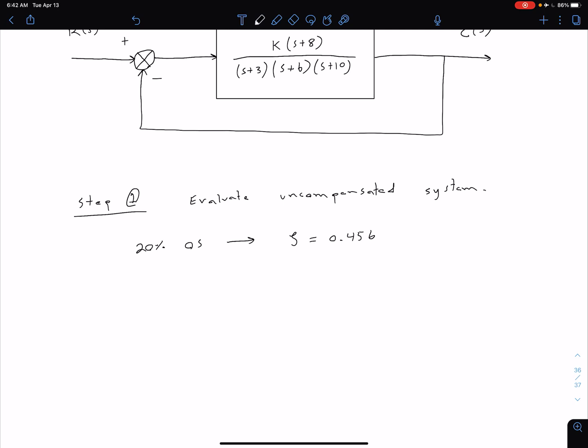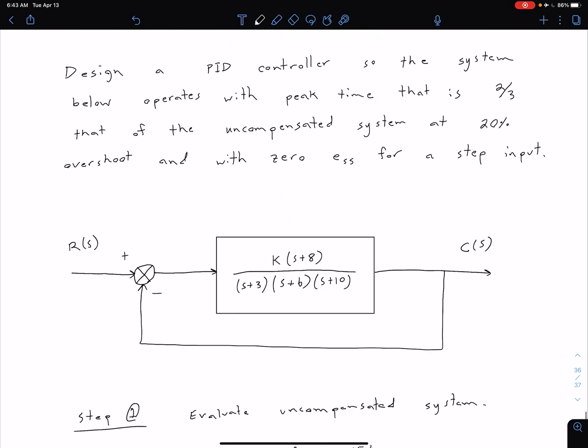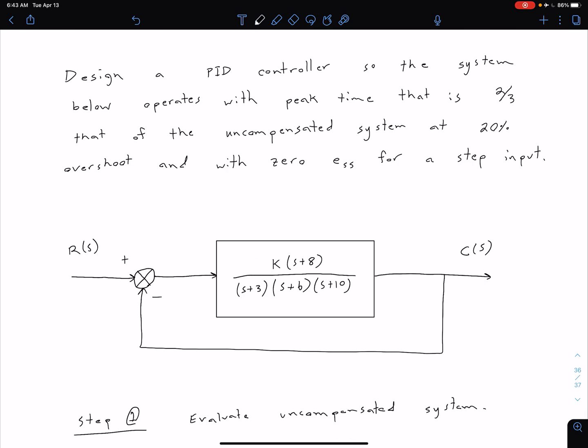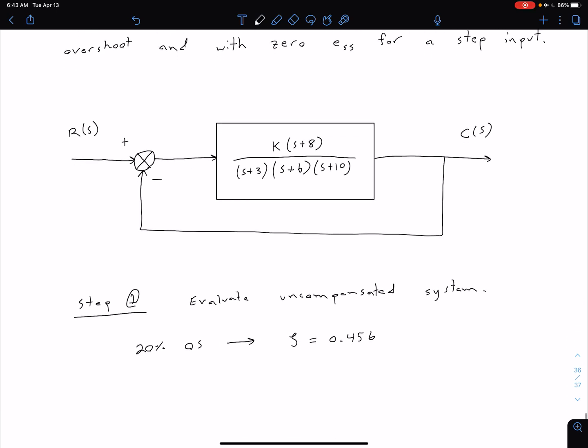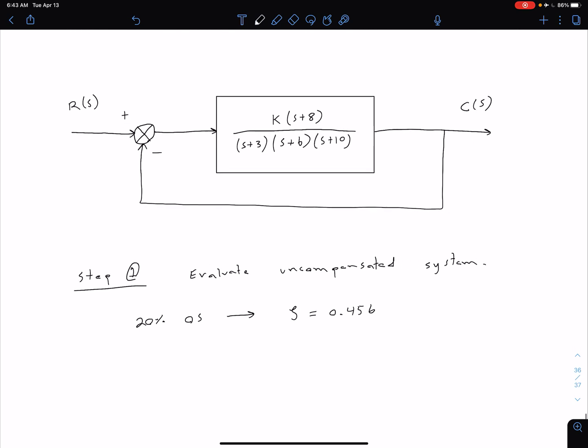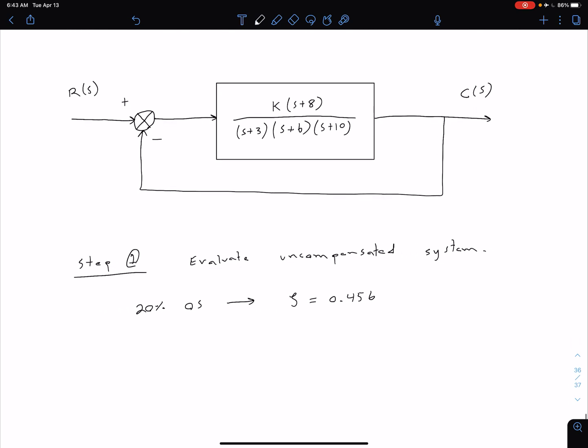The next thing that we wanna find is our peak time, because that's what we want to reduce by two-thirds. Let's go ahead and plot our full root locus. From there, we can find our dominant poles that intersect this damping ratio line. And from there, we can talk about our peak time as well as our settling time and some other parameters. So let's come down here and plot that root locus. This is gonna be a good chance to get some practice plotting again as well.